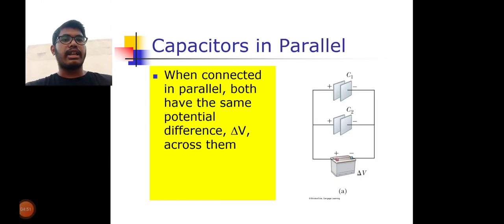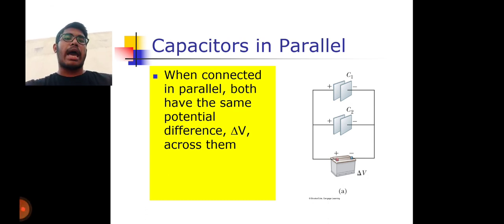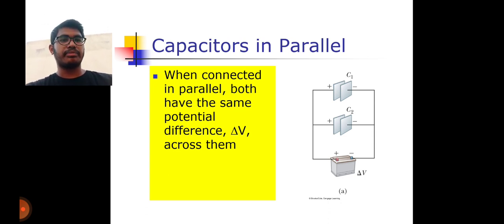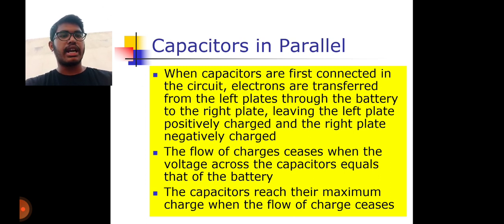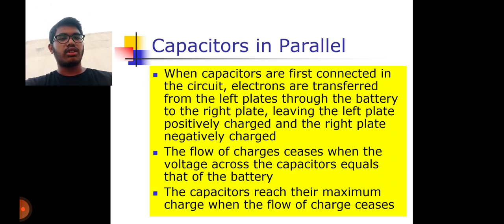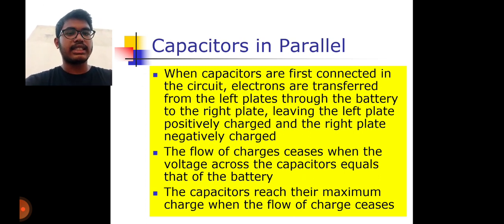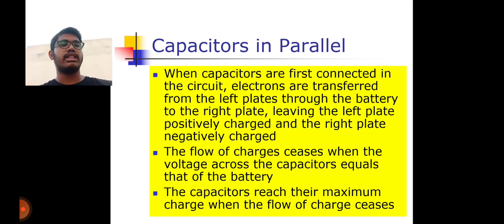In capacitors in parallel, both capacitors have the same potential difference across them — same as resistors in parallel. When capacitors are first connected in the circuit, electrons are transferred from left plates to right plates through the battery, leaving the left plates positively charged and right plates negatively charged. The flow of charges ceases when the voltage across the capacitor equals the battery voltage, and capacitors reach their maximum charge.